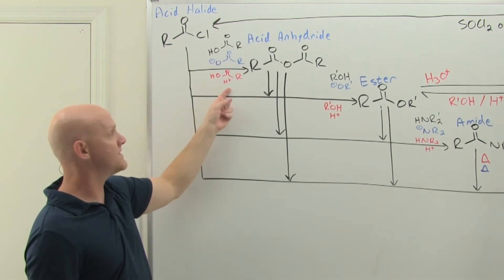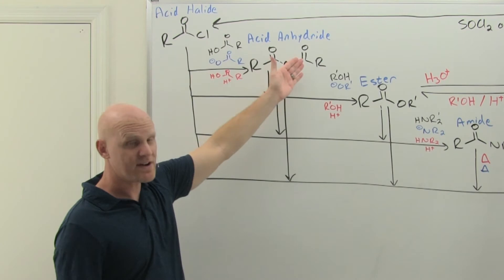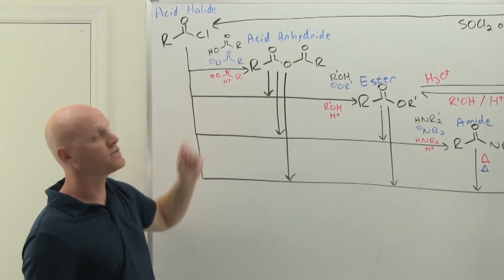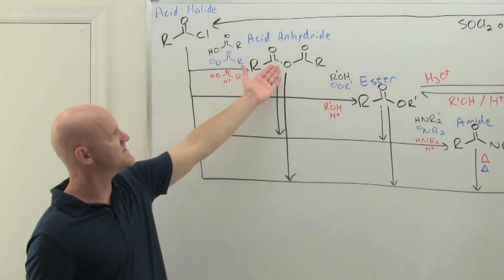Once again with acid catalyzed, generally with the acid chlorides and the anhydrides as we'll see, we generally don't actually do the acid catalyzed reactions, but if you did it would still produce in this case the anhydride.